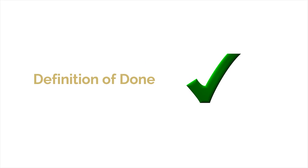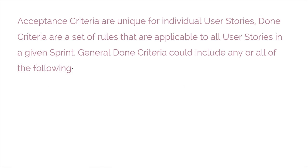The major difference between done criteria and acceptance criteria is that acceptance criteria are unique for individual user stories, whereas done criteria are a set of rules that are applicable to all user stories in a given sprint. As with the acceptance criteria, all conditions of the done criteria must be satisfied for the user story to be considered done.